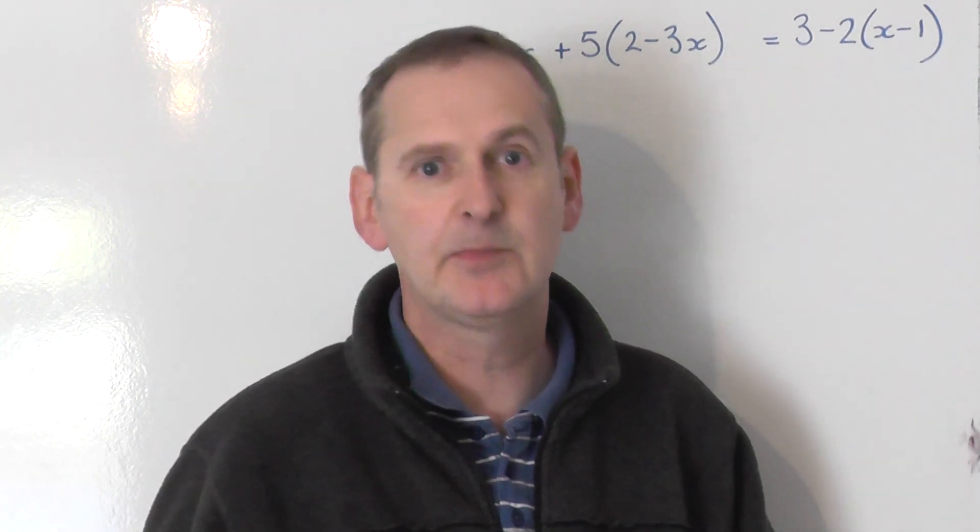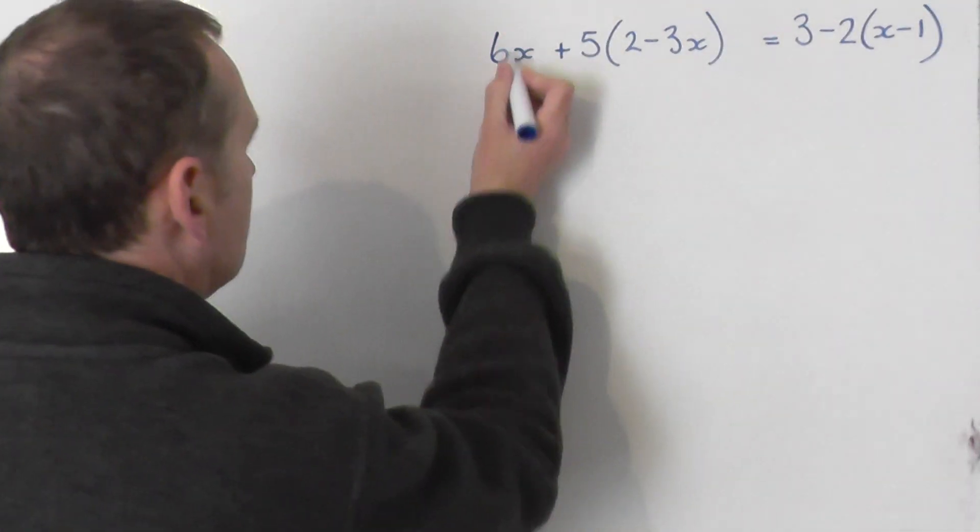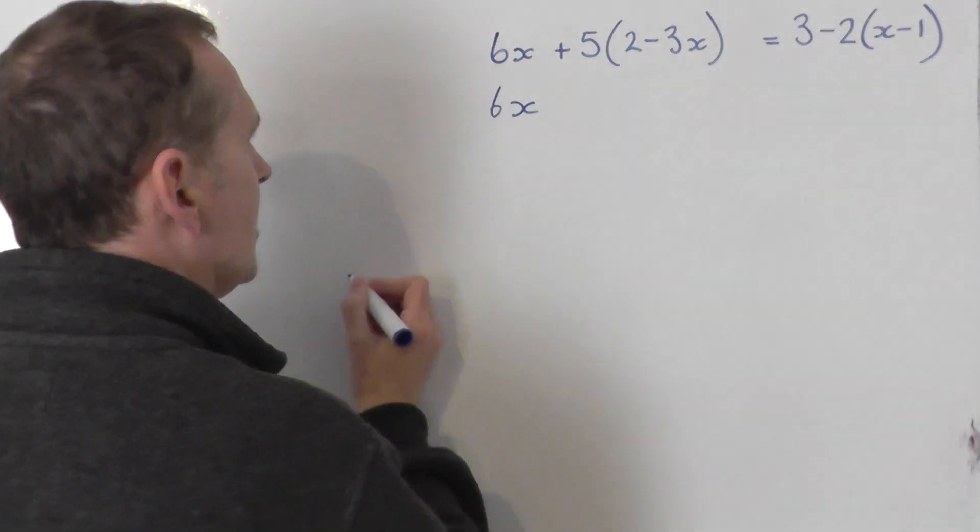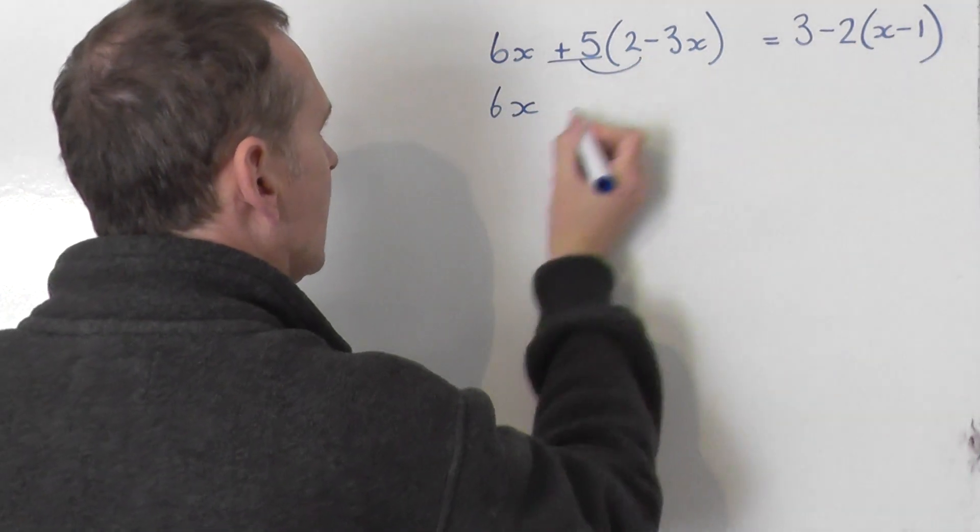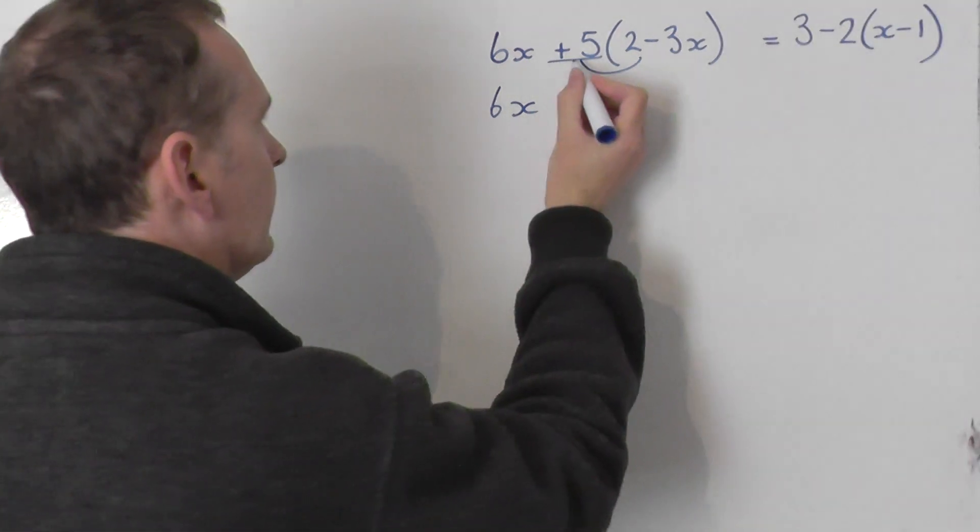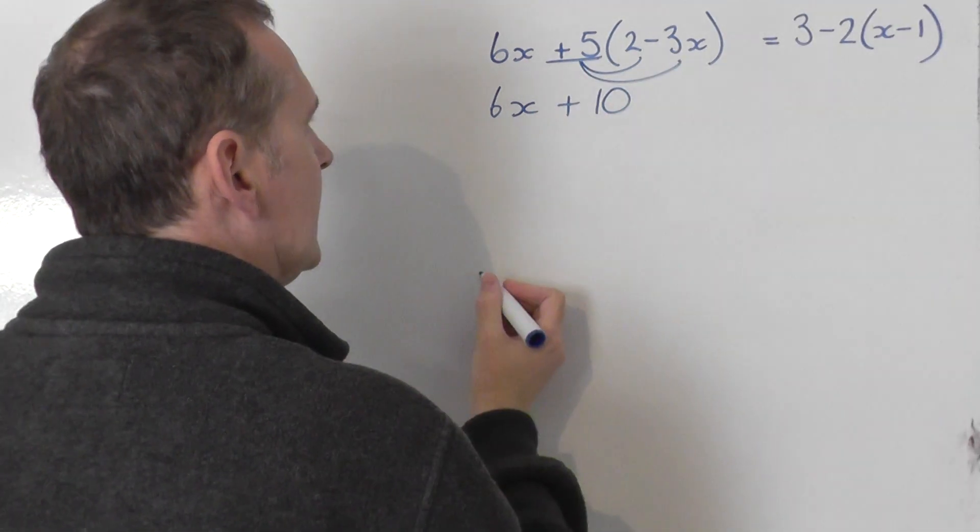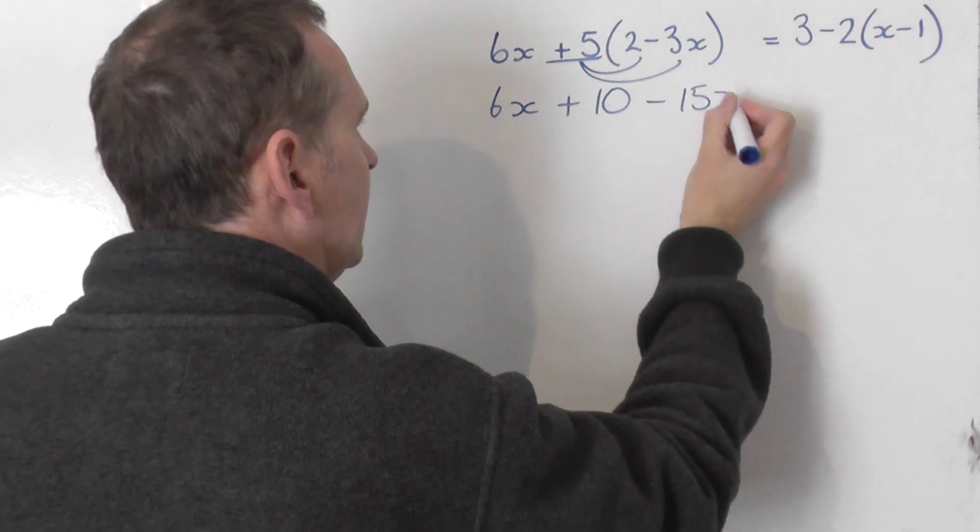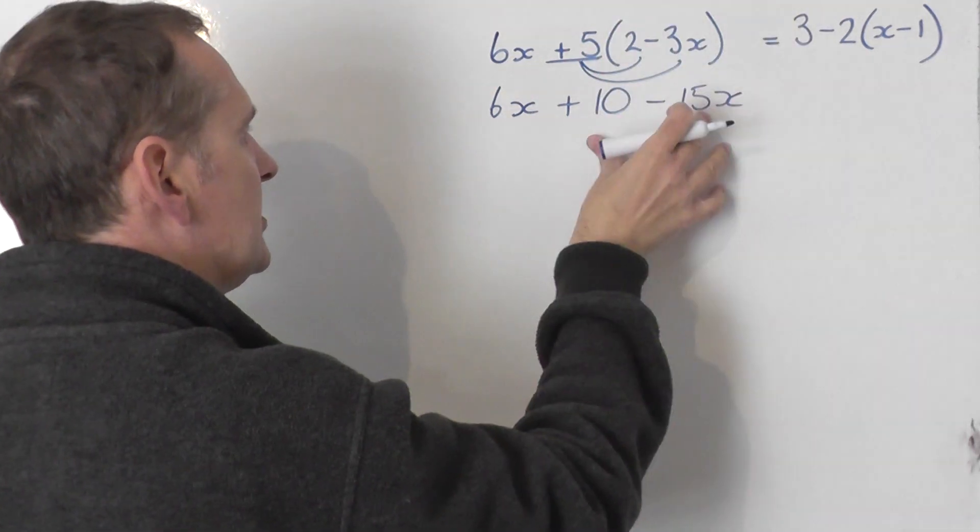Get rid of the brackets first by expanding them out. I'm going to leave the 6x unchanged and say plus 5 times 2 is plus 10. Then plus 5 times negative 3x is minus 15x.